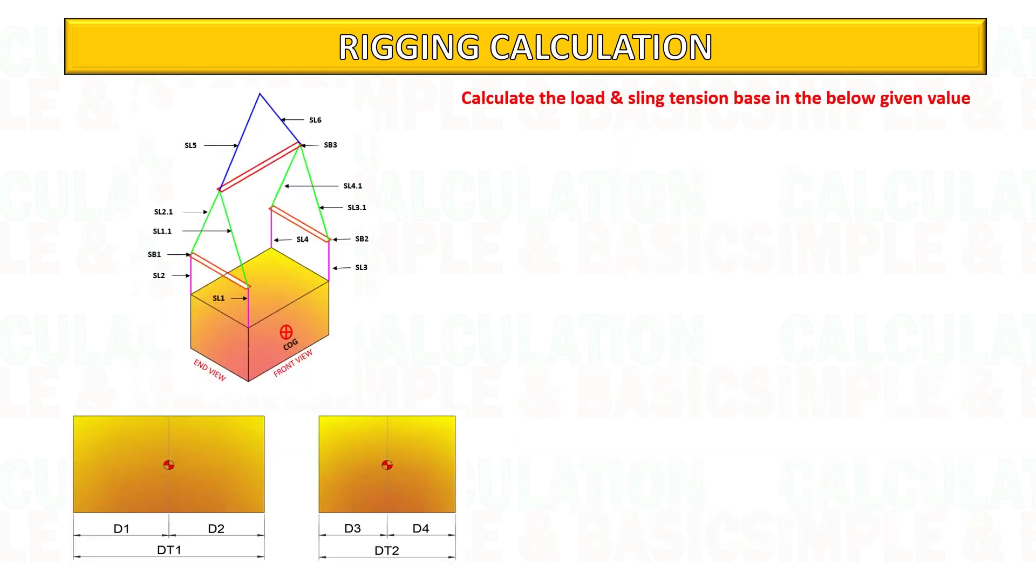Calculate the load and sling tension based on the below given values. In this example we consider the weight of the cargo is 50 ton or 50,000 kilograms and other parameters are mentioned below. Weight of below spreader bar is 1 ton each and weight of above spreader bar is 3 ton.